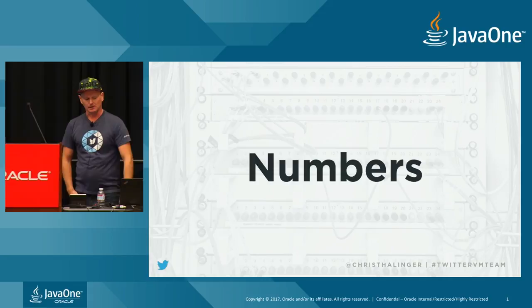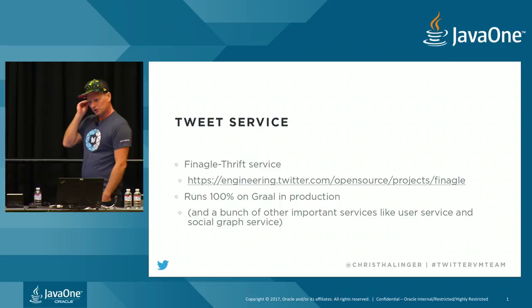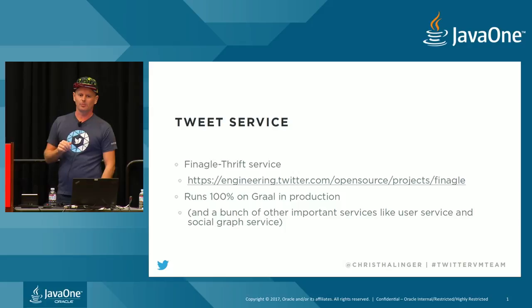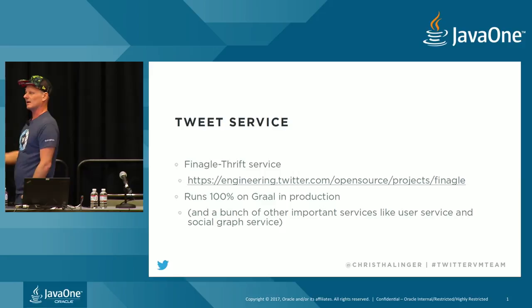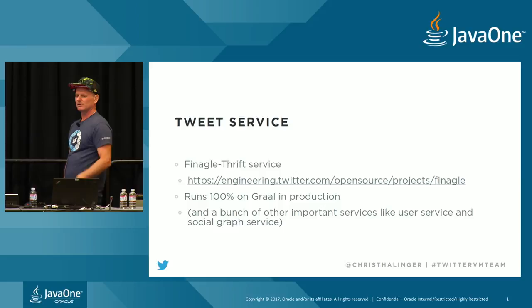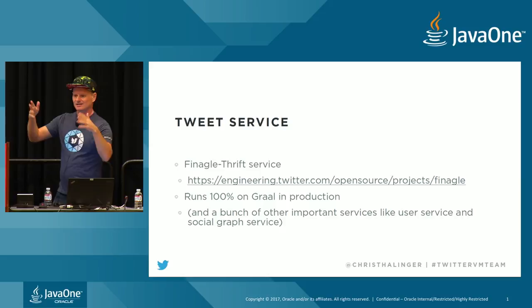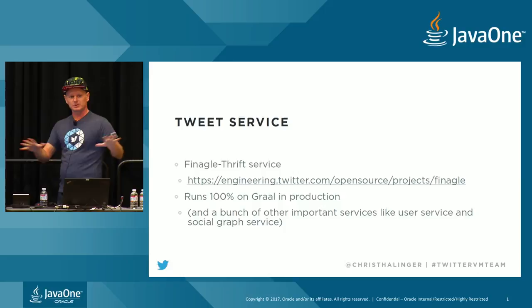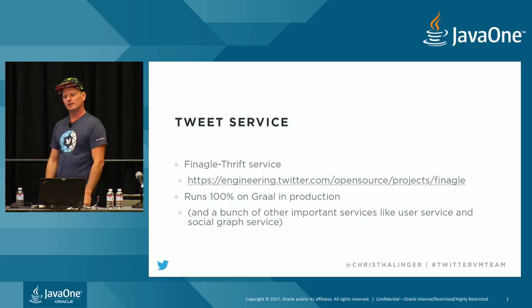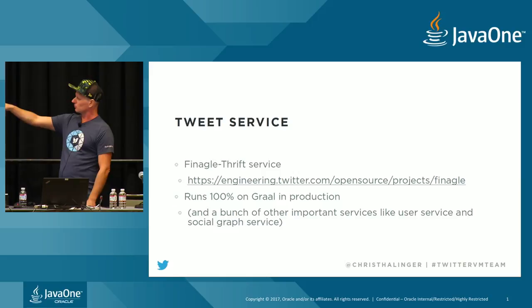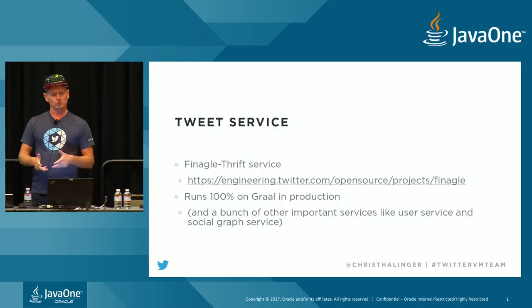Now, numbers — I think that's the interesting part. I chose the tweet service, which is one of our bigger ones and the first one I tried. It's a Finagle Thrift service — Finagle is an open source project you can download. This service runs 100% on Graal in production — all instances run on Graal today. Including a bunch of other services like the user service and the social graph service. Pretty much everything you do on the web or on your Twitter client runs through Graal-generated code today.